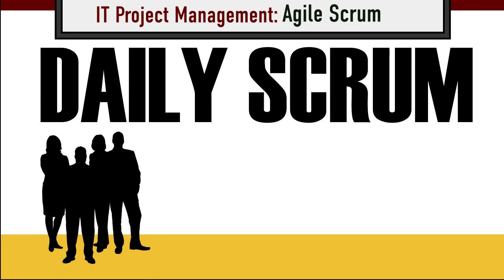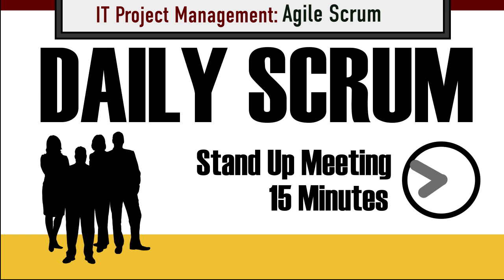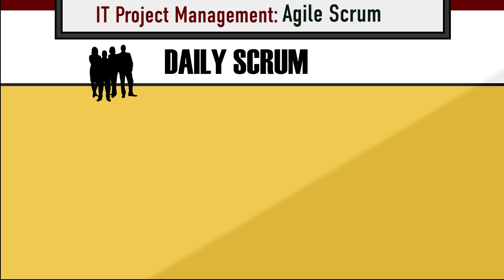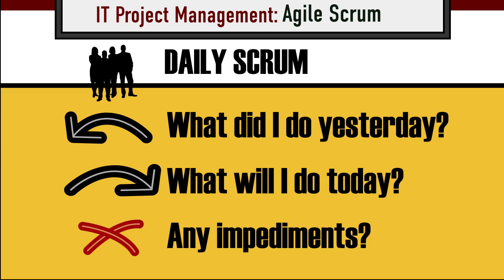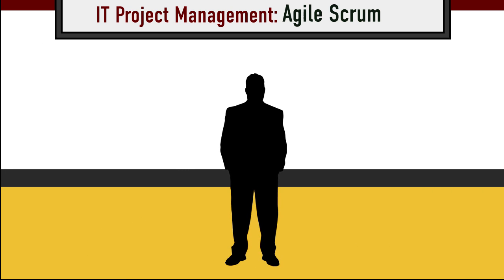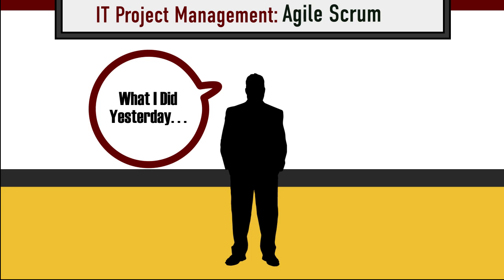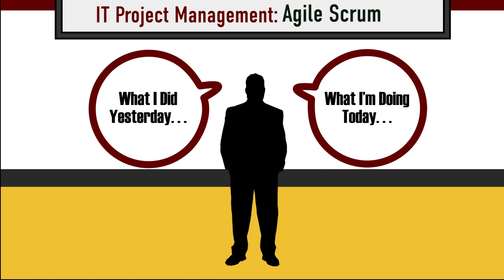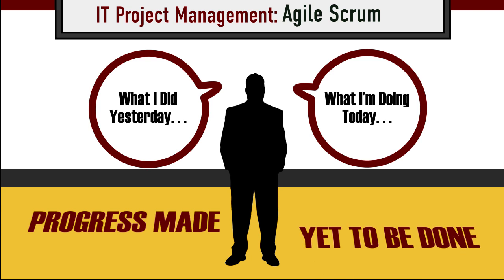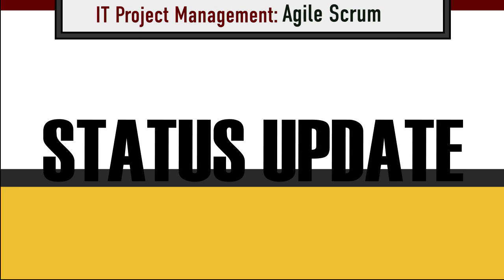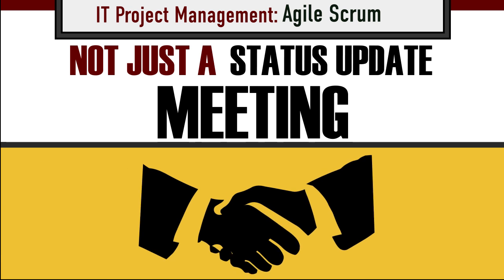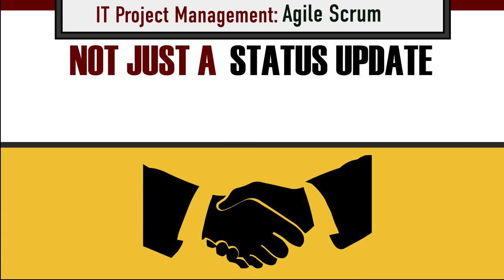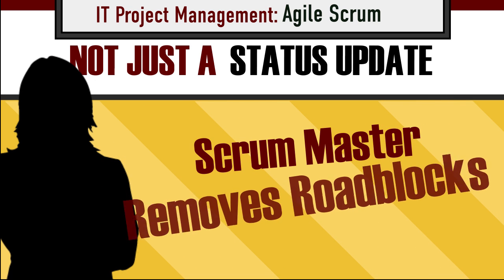The daily Scrum is usually a stand-up meeting that lasts approximately 15 minutes. During this time, each member of the development team answers these questions: What did I do yesterday? What will I do today? And do I see any impediment in my way? By listening to what each team member accomplished yesterday and what they'll accomplish today, the team learns what progress has been made and what work is still outstanding. The daily Scrum isn't just a status update — it's a meeting where team members make commitments to each other. If any team member has a roadblock, it's the Scrum Master's responsibility to handle the problem.